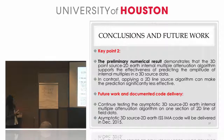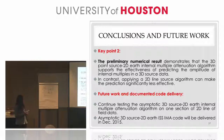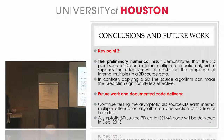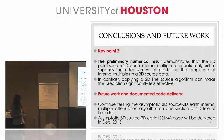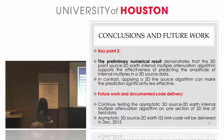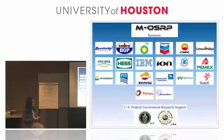Here is the future work and documented code delivery. In the future, we will continue testing the asymptotic 3D source 2D Earth internal multiple attenuation algorithm on one section of a 2D line of field data. We will also provide documented code by December 2015. Thank you, and I would like to thank all the sponsors for your encouragement and support.